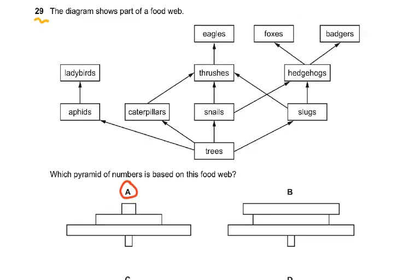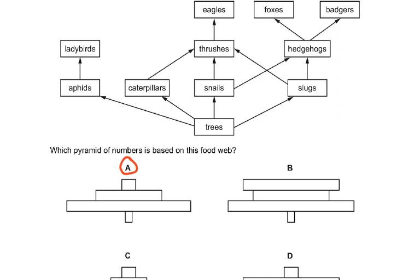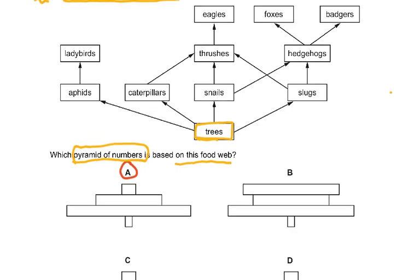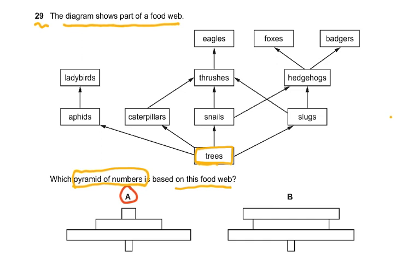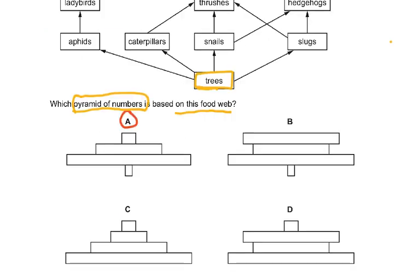Question 29 is a rather complex question about a pyramid of numbers based on a food web. The first thing to note is that trees are the producer. On the trees you have aphids, caterpillars, snails and slugs. The number of trees couldn't be greater at the base in the usual sense — the number of insects feeding on trees would be in hundreds or thousands, so C and D were wrong.